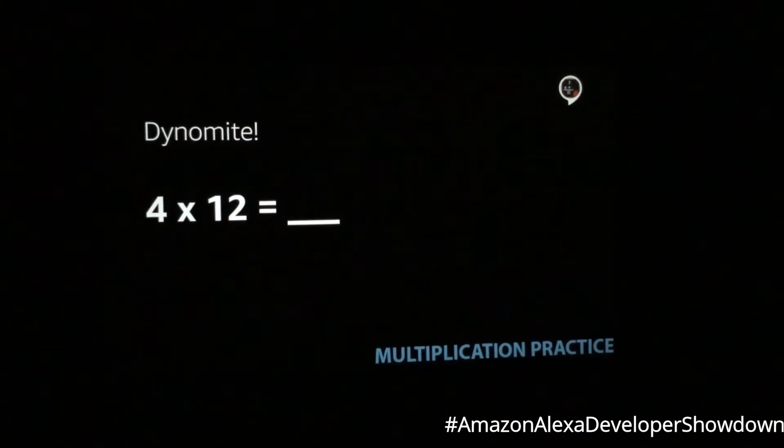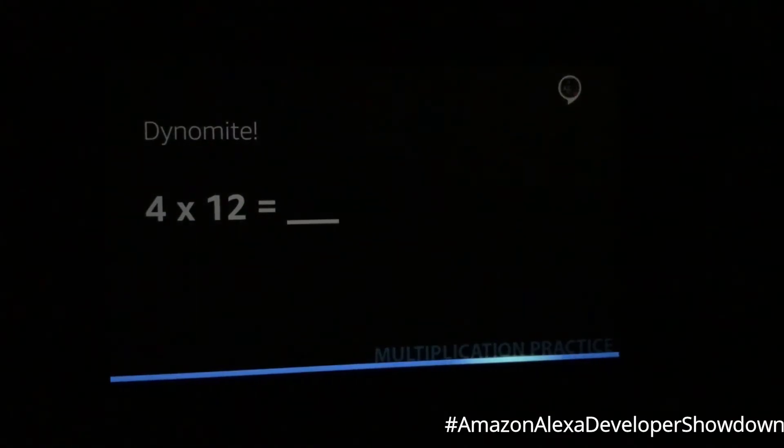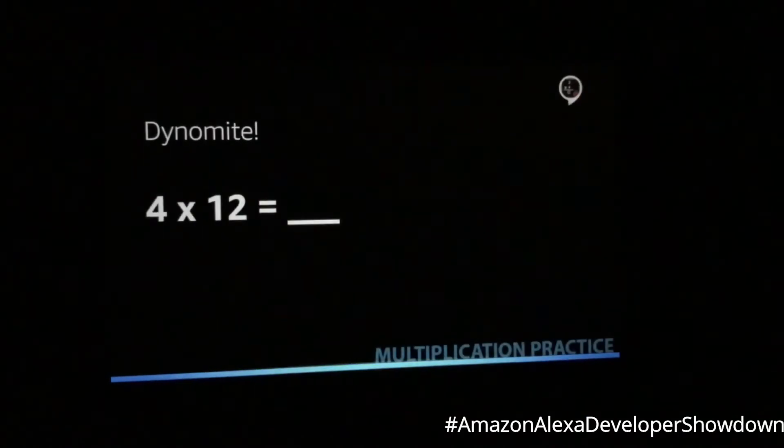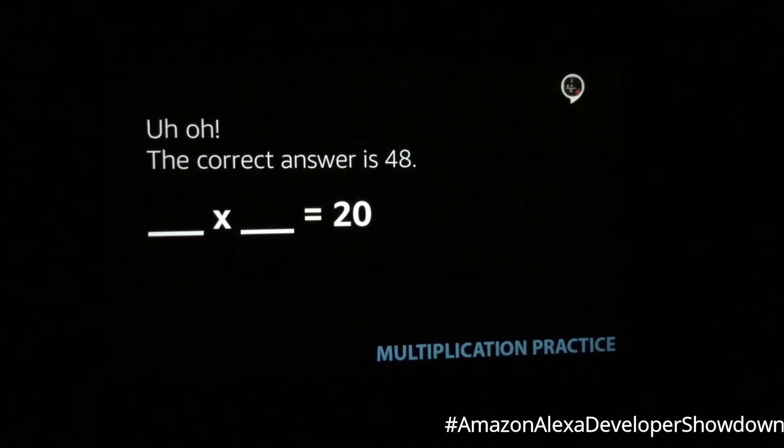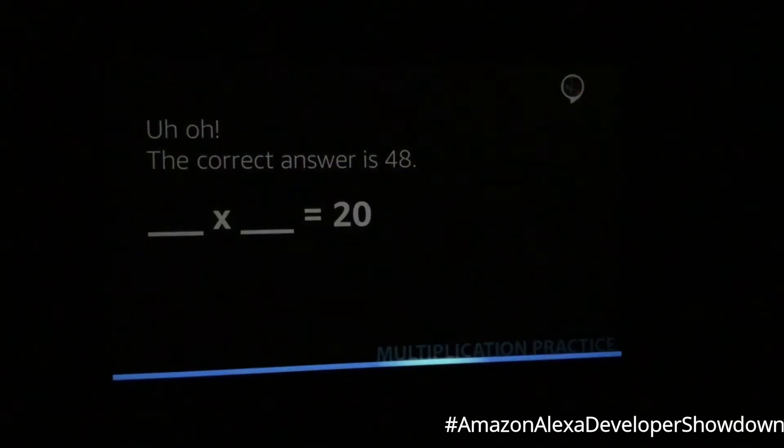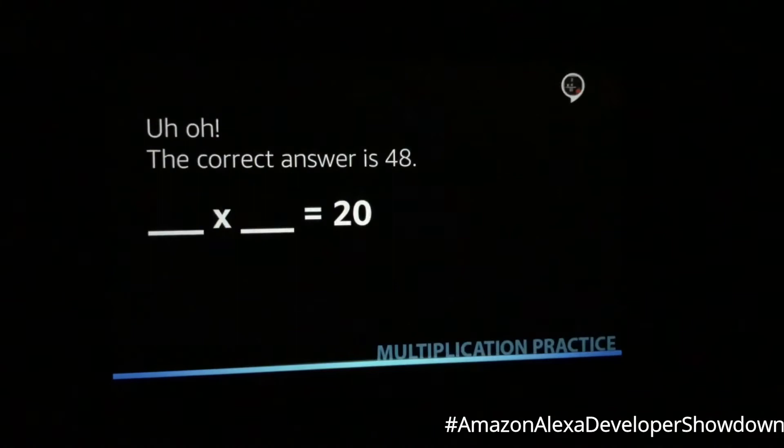What is 4 times 12? I don't know. Uh-oh. The correct answer is 48. What two numbers multiplied together equals 20? 2 and 10. Yippee!